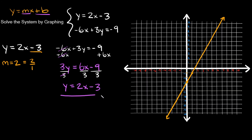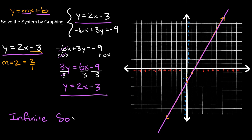If you notice, this equation y equals 2x minus 3 is the exact same as the first equation. That means negative 6x plus 3y equals negative 9 literally sits right on top of the line we already graphed. When two lines are the exact same line, those are coincident lines, and they have an infinite amount of solutions — because every single point on one line is also on the other.